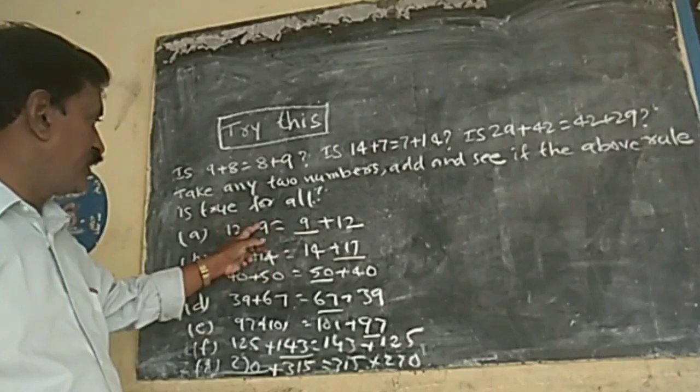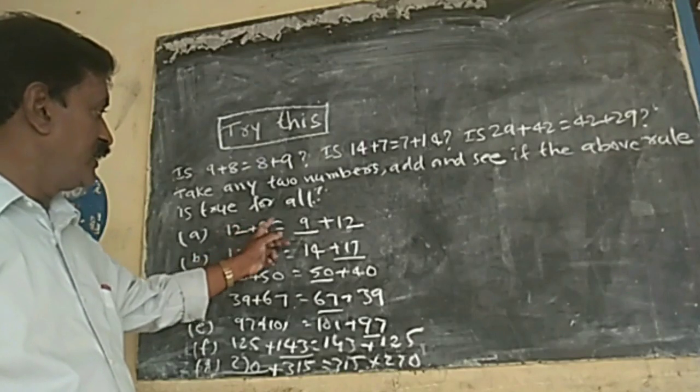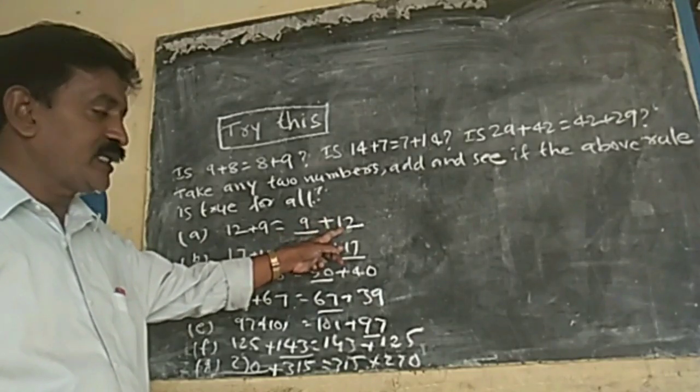12 plus 9 is equal to 21. So, right, reverse: 9 plus 12 is equal to 21. So, this rule is correct.